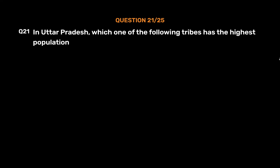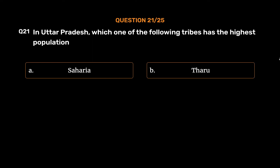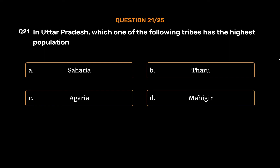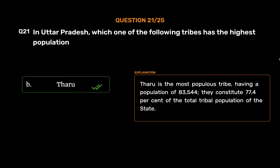Question No. 21: In Uttar Pradesh, which one of the following tribes has the highest population? The correct answer is the most popular tribe, having a population of 83,544. They constitute 77.4% of the total tribal population of the state.